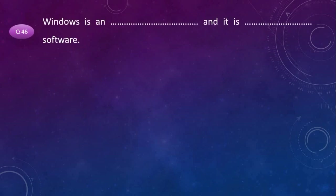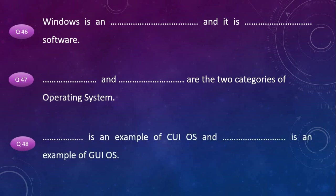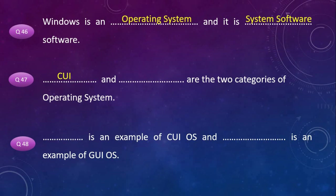Windows is an operating system and it is system software. The two categories of operating system are CUI and GUI. DOS is an example of CUI OS and Windows is an example of GUI OS.